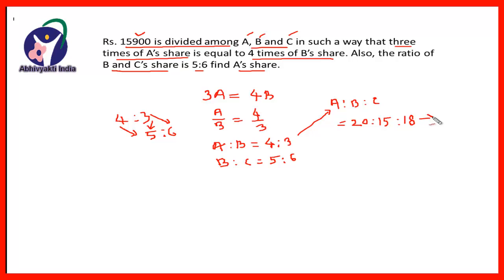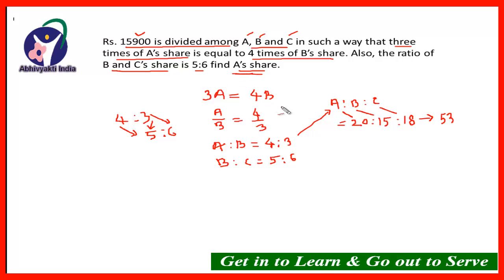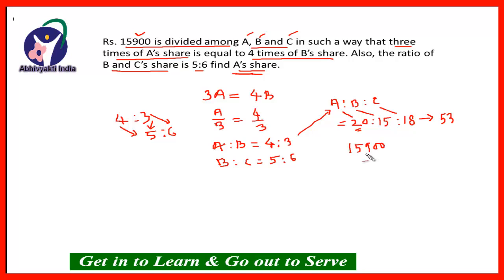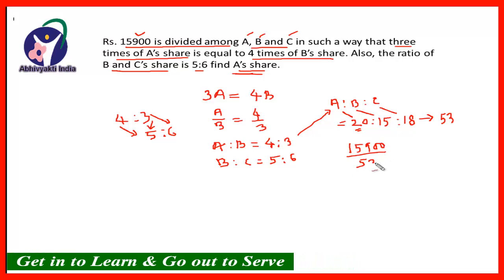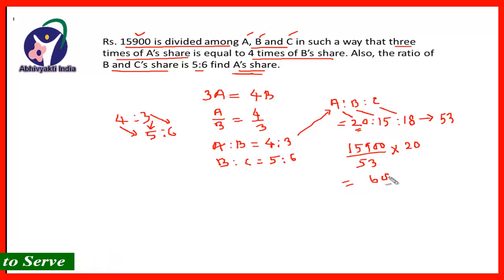Therefore, the total parts will be 20 plus 15 plus 18, that is equal to 53. So out of 53 parts, A will have 20 parts, B will have 15 parts and C will have 18 parts. A's share is 15,900 divided by 53, multiplied by 20, which gives us Rs.6,000. Therefore, A's share is Rs.6,000.